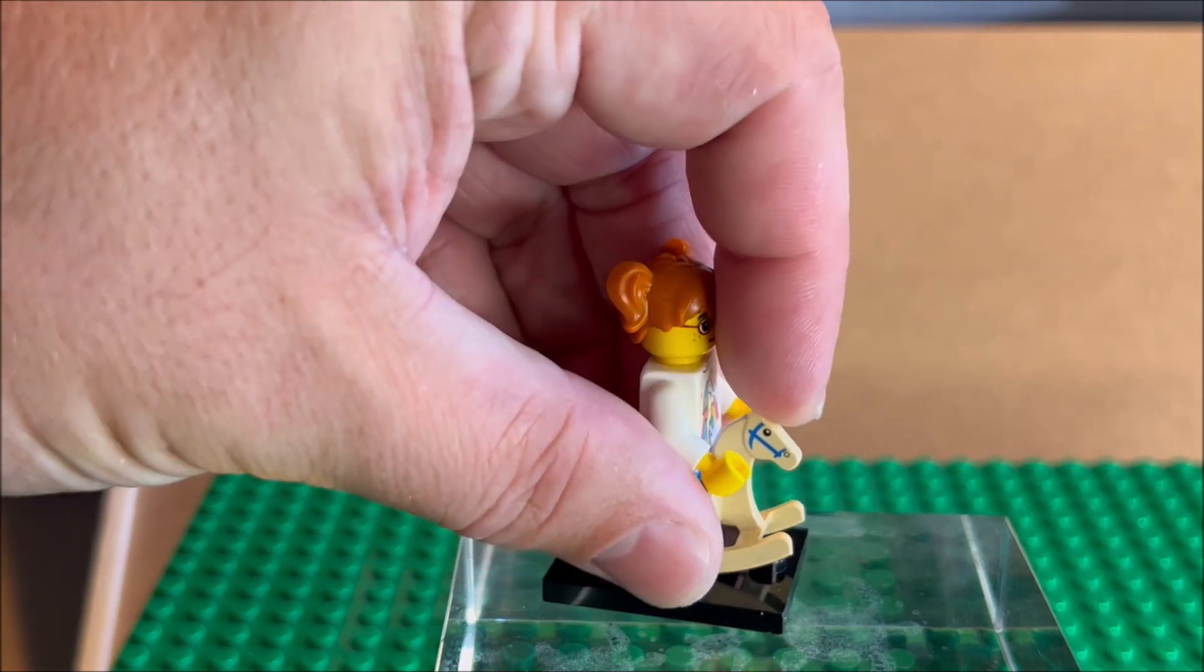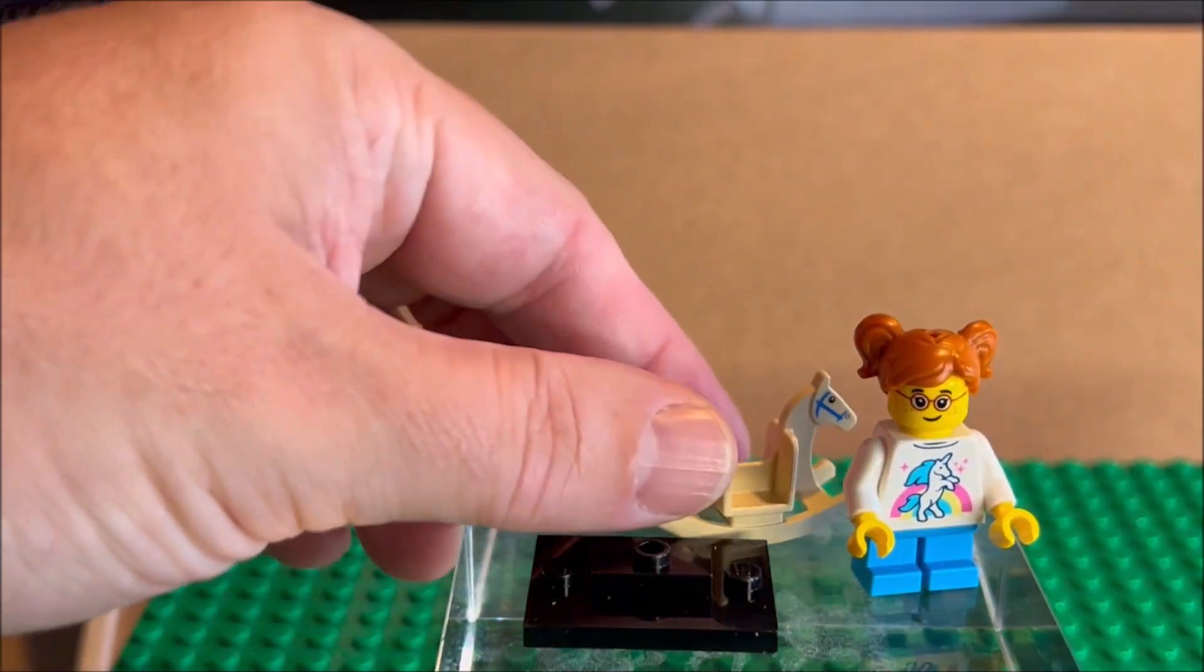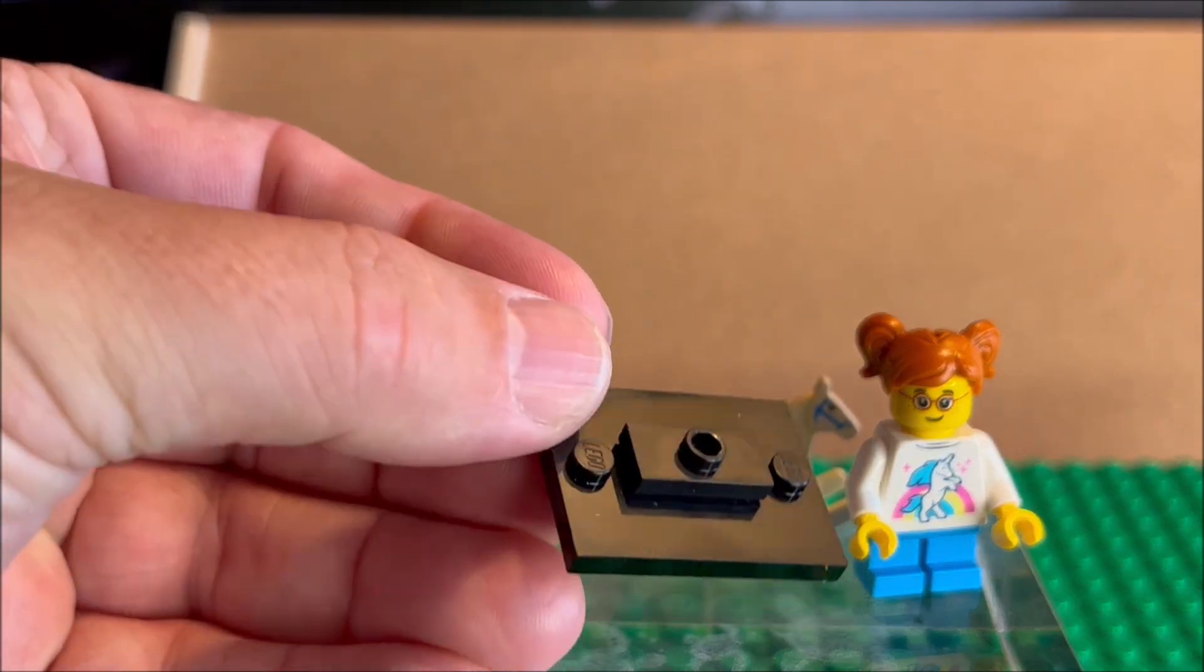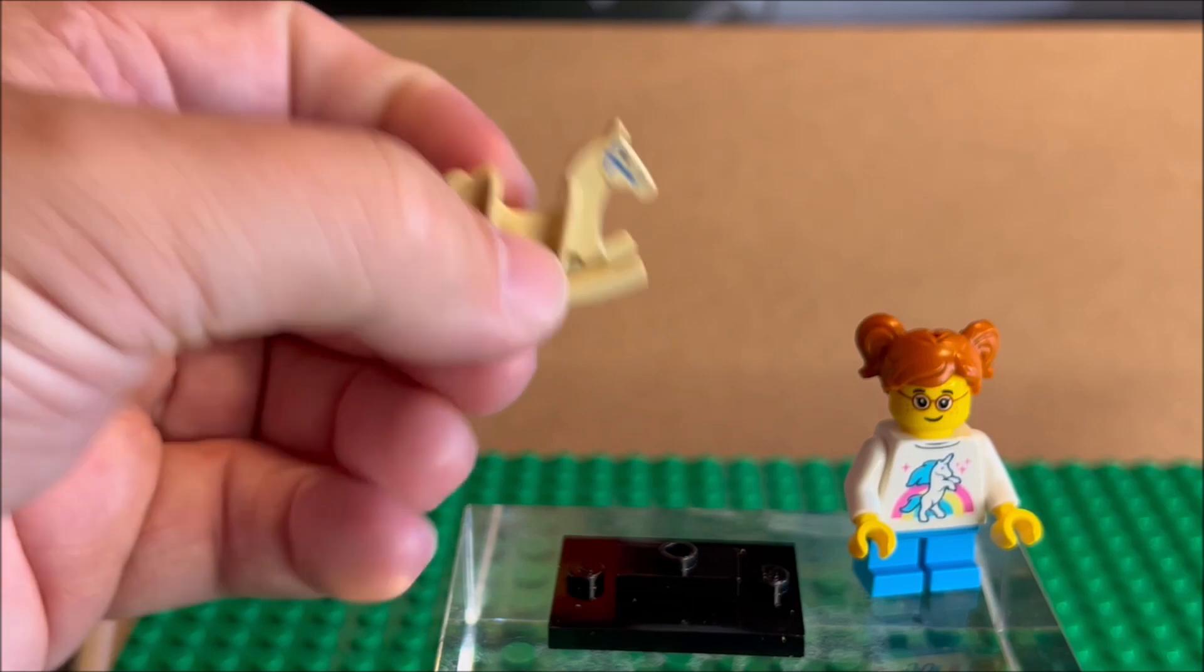The rocking horse is on one of these little base plates. The base plate is generic. This rocking horse is one solid piece. It does rock.